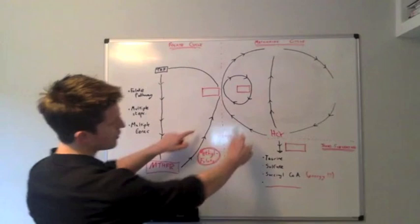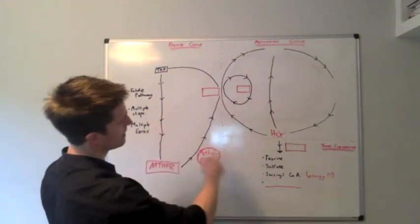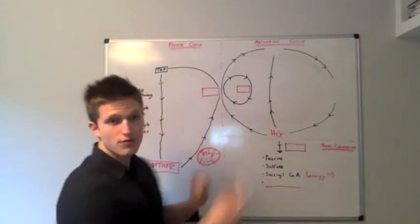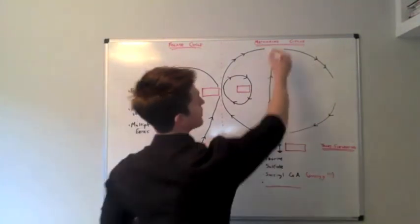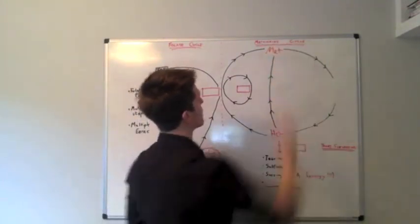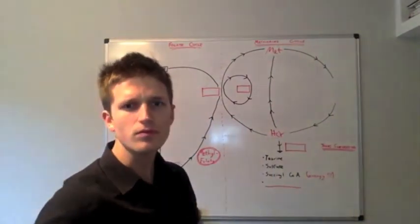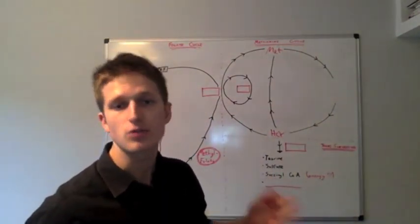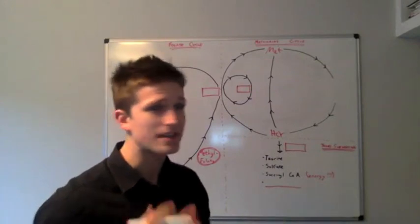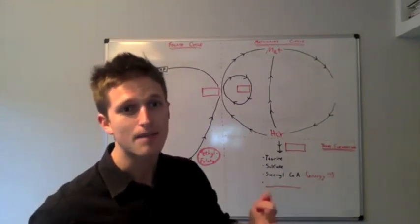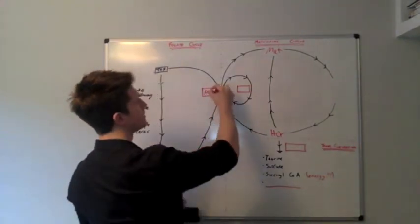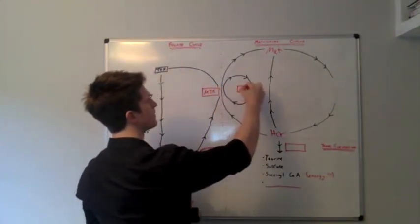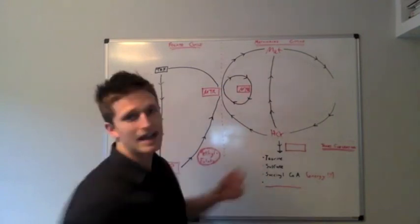And if you watch what the arrows do and where they intersect, methylfolate has a profound role in turning homocysteine back into methionine. And that largely also revolves around the complex interplay between folate and B12. And the enzymes involved in that are MTR and MTRR.